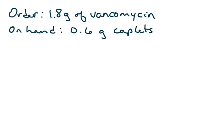Now, here's a few practice problems. So, the order is for 1.8 grams of vancomycin, and you have on hand 0.6 caplets. So, what you're going to do is go ahead and set it up. And they say that the first number is the dose that's ordered. I usually just say what's ordered over what's on hand times the quantity. So, what's ordered is 1.8 grams. You always need to make sure to write the units. And on hand, you have 0.6 grams per 1 caplet.